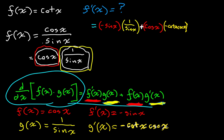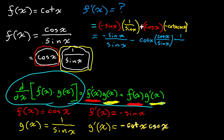Let's simplify this out a little bit. We're going to have negative sine of x over sine of x minus cosine of x times cosine of x over sine of x, times 1 over sine of x. So we get negative 1 minus cosine squared of x over sine squared of x, which is very clearly negative 1 minus cotangent squared of x.